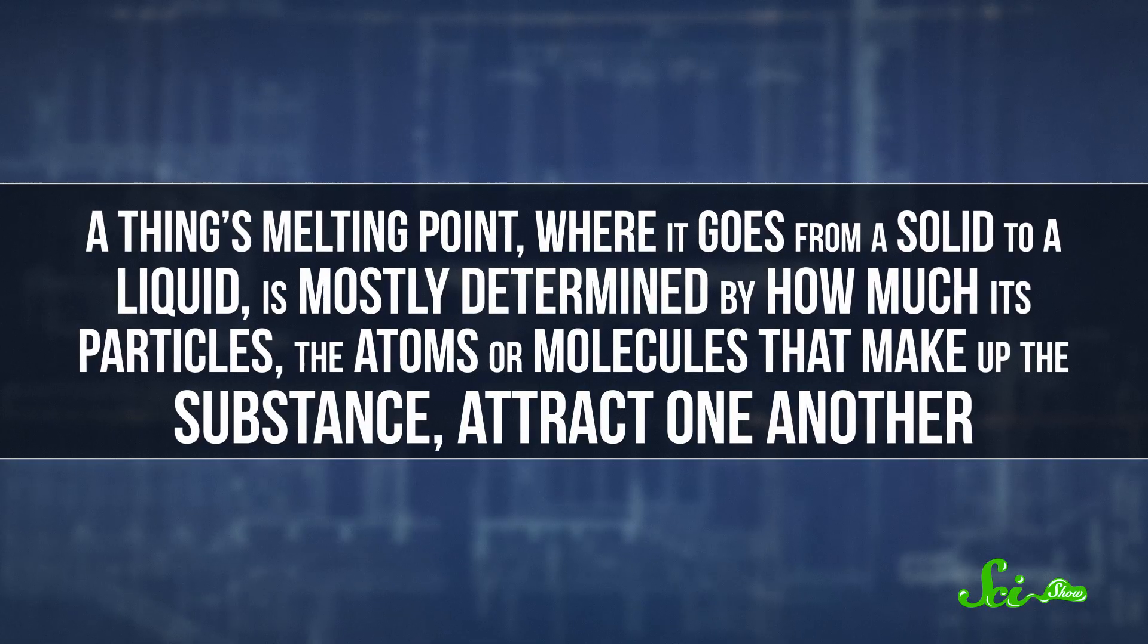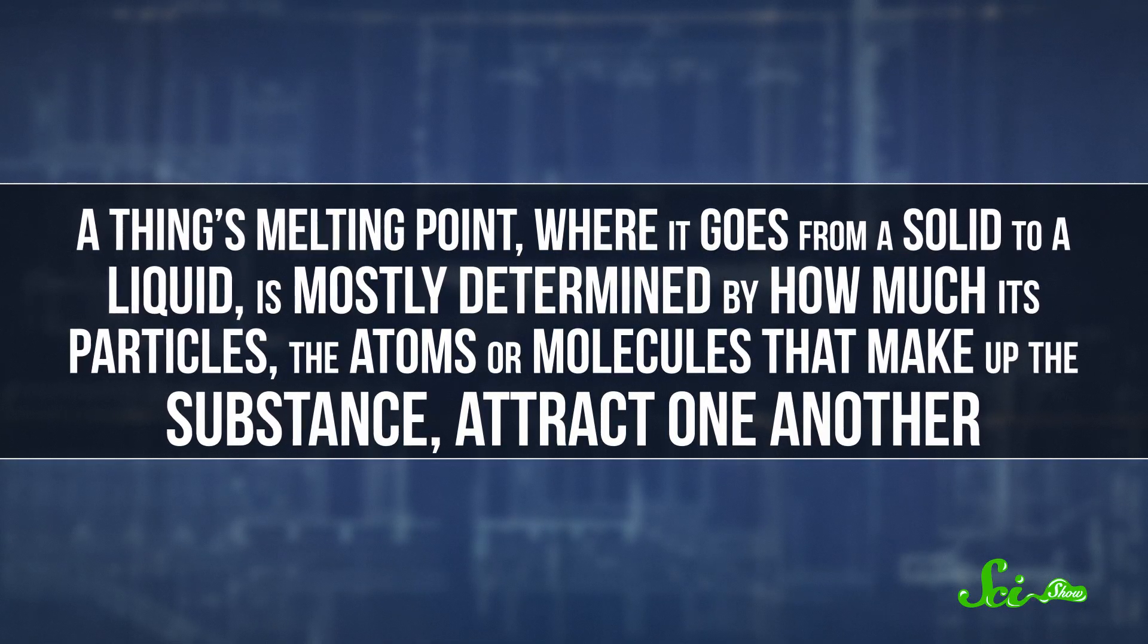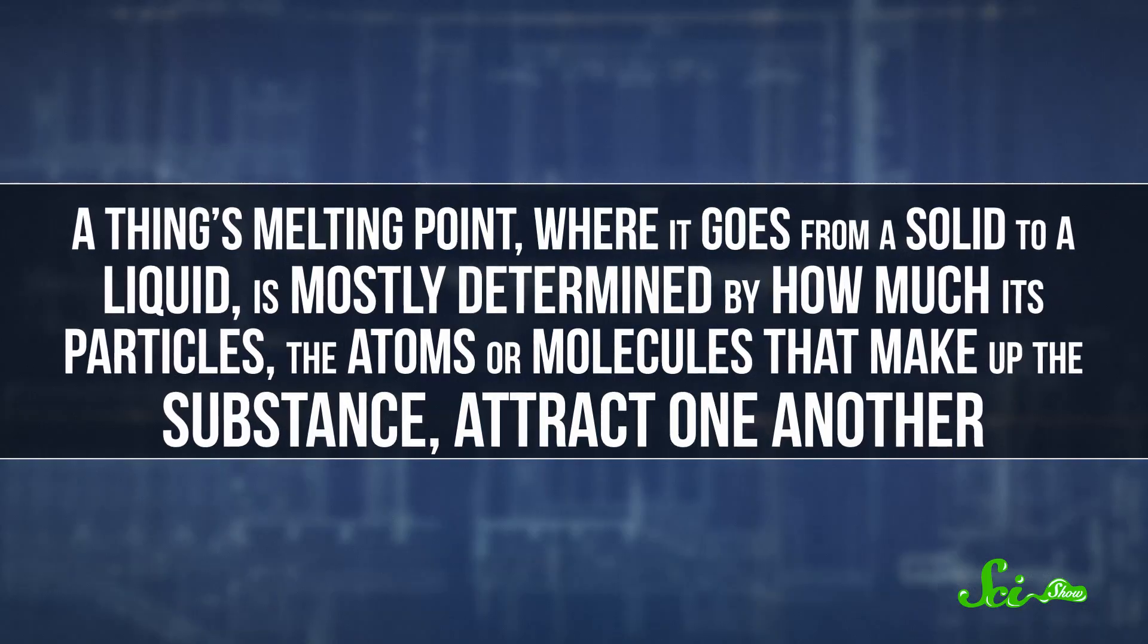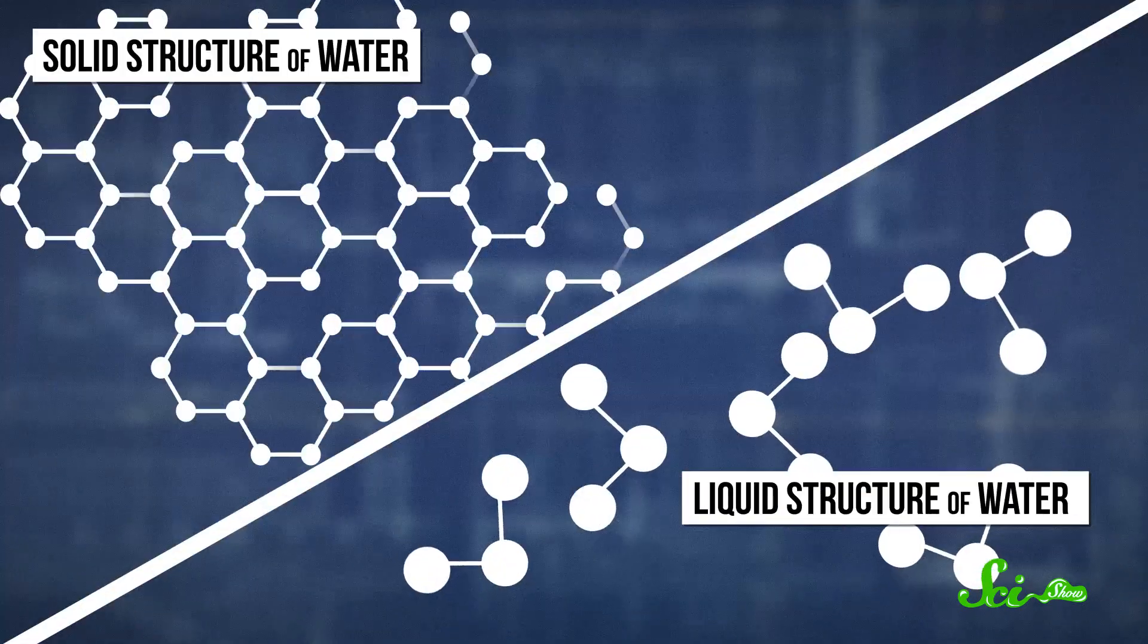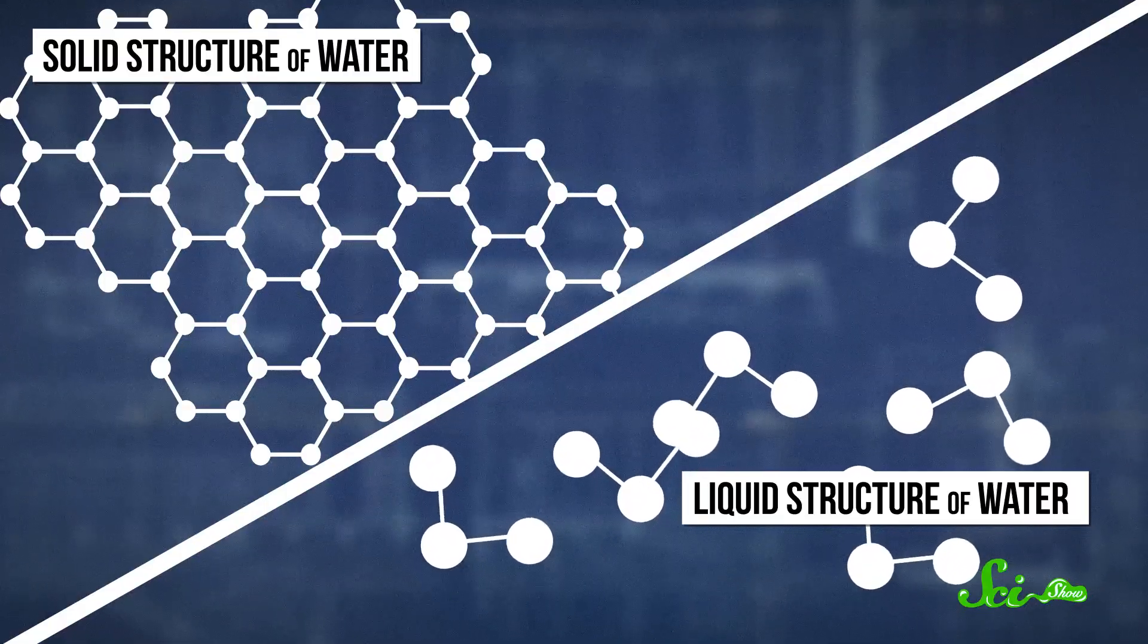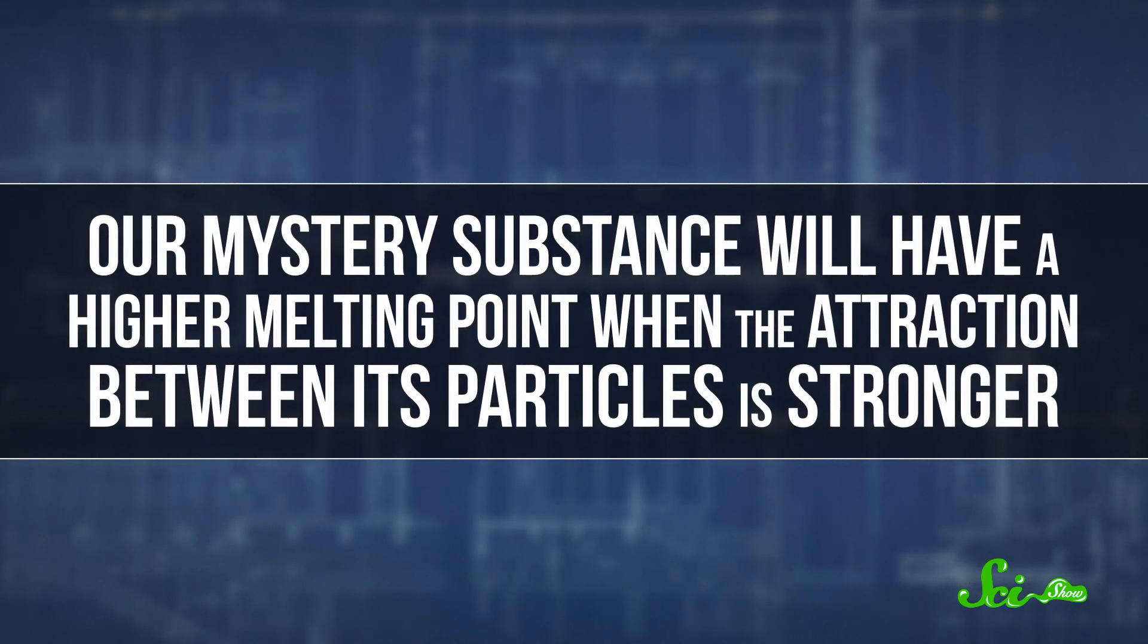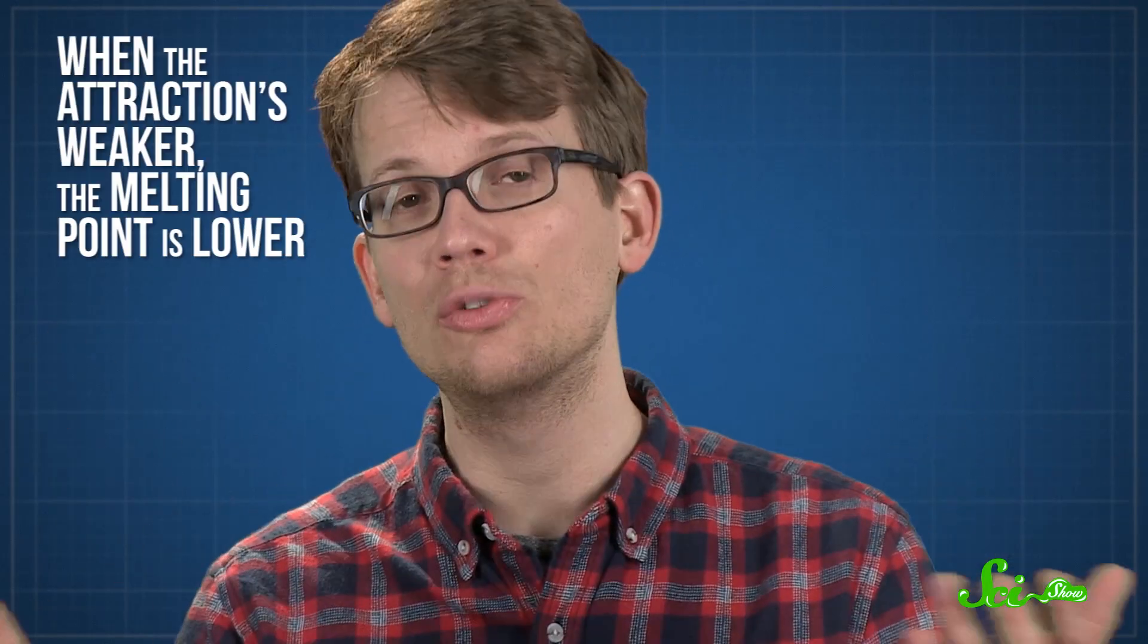But before we get to why that is, let's talk about why things melt and boil in the first place. A thing's melting point, where it goes from a solid to a liquid, is mostly determined by how much its particles – the atoms or molecules that make up the substance – attract one another. That's because solids are made of particles that are held together very rigidly. But in liquids, they're much more loosely attached. And at higher temperatures, particles have the energy to move around more. So our mystery substance will have a higher melting point when the attraction between its particles is stronger. They need the extra energy of a higher temperature to move around enough to get into a flowy liquid. And when the attraction's weaker, the melting point is lower.